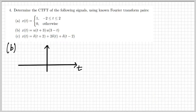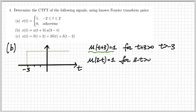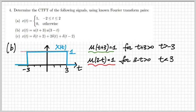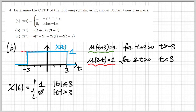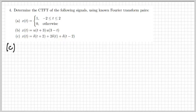Part b gives us x(t) defined as the product of two step functions: u(t+3) and u(3−t). u(t+3) is nonzero when t is greater than minus three; u(3−t) is one when t is smaller than three. Their product is one when both are one, resulting in a rectangular signal. This is the same kind of signal as in part a with T1 equal to three, so the Fourier transform is 6 sinc(3ω/π).